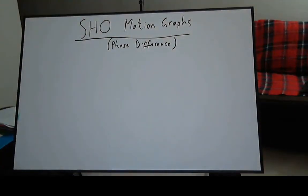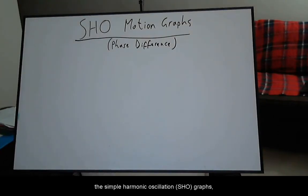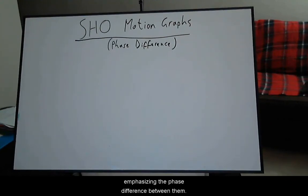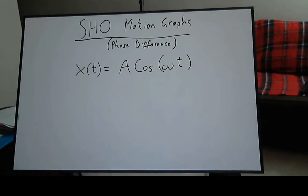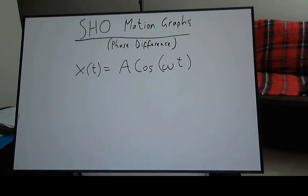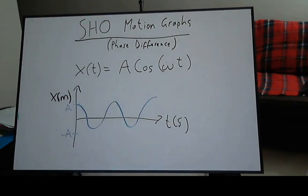In this video I will discuss the simple harmonic oscillation motion graphs, emphasizing the phase difference between them. I will use the simplest example of the position function. A represents the amplitude of the oscillation, omega is the angular frequency, t is time. This will produce the graph of a cosine.